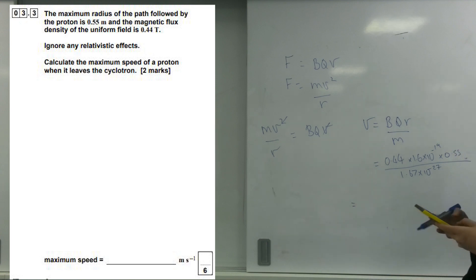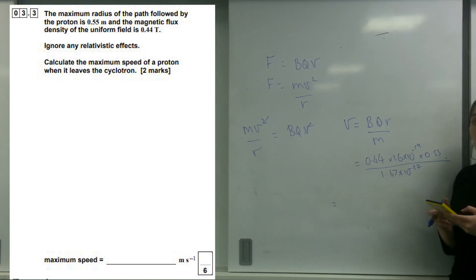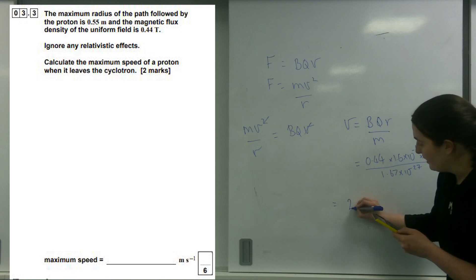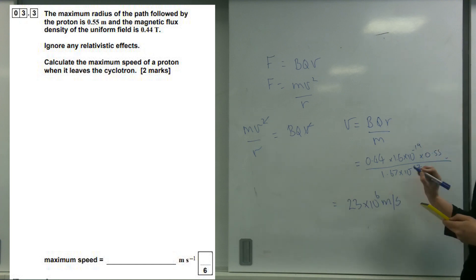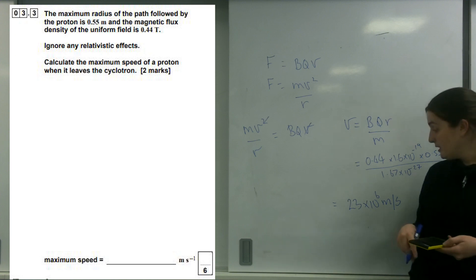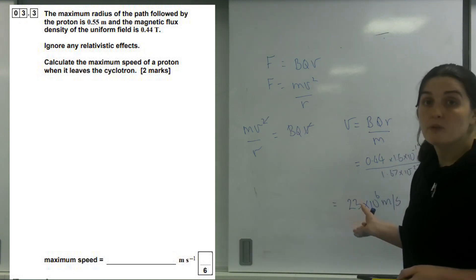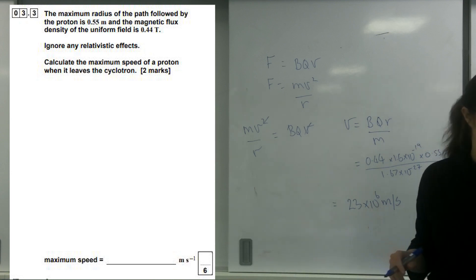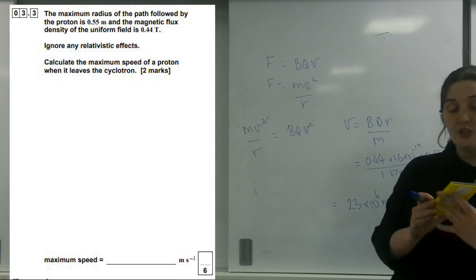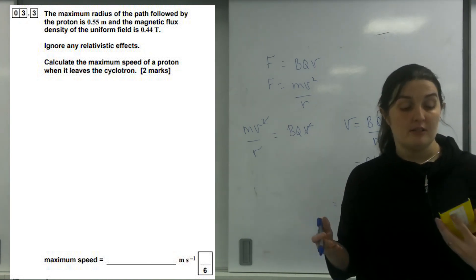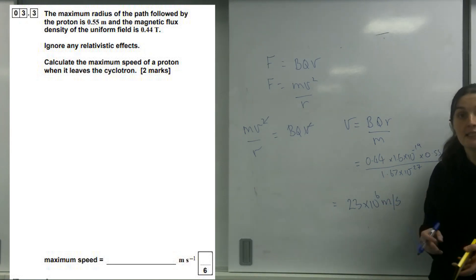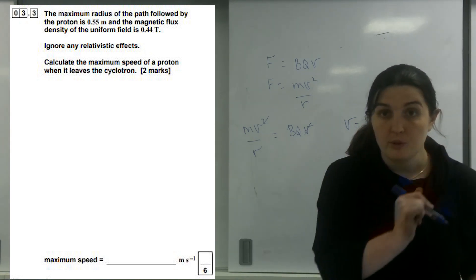Let's put this into my calculator. I've got 0.44 times by the charge on a proton, 1.6 times 10 to the minus 19, times by the radius 0.55, divided by 1.67 times 10 to the minus 27. I get 23 times 10 to the 6 metres per second. If I check the mark scheme it's 2.3 times 10 to the 7, so I was okay with 23 times 10 to the 6. The reason I got that number is because I pressed the eng button on my calculator, which puts things into engineering notation, so this is mega metres per second.